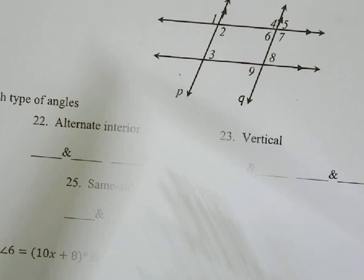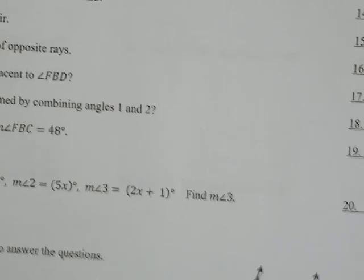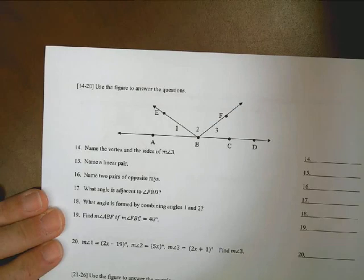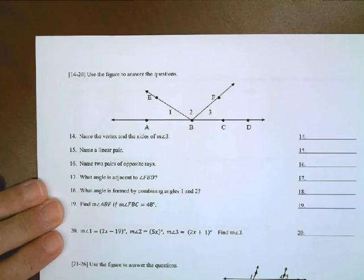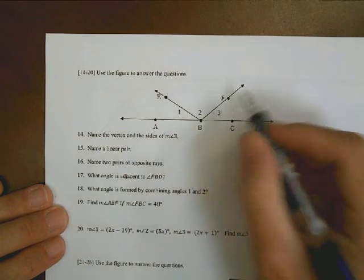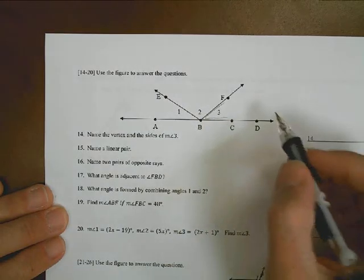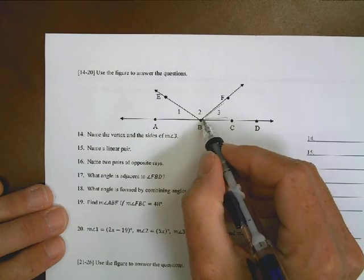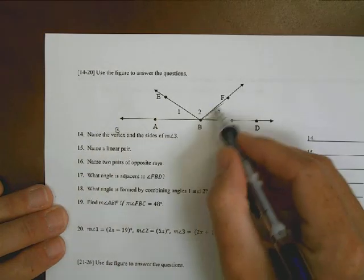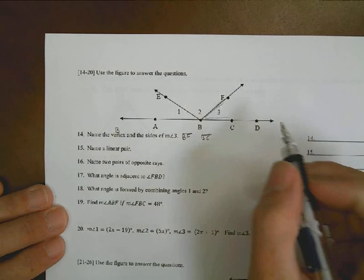Let's go to the next page. On the next page, first you have this picture. It wants us to use this figure to answer several questions related to the figure. Number 14, it wants to know the vertex and the sides of angle 3. Well, this is angle 3 right here, right in that space there. And so our vertex is going to be at the point where it comes together. That would be B. And the sides are these things right here. So we have BF and we also have BC.